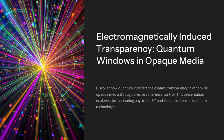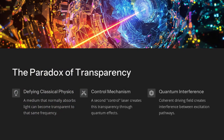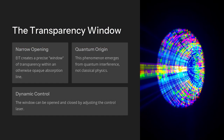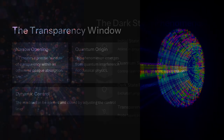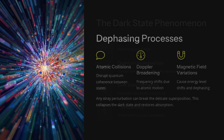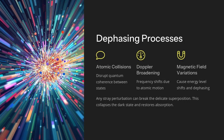How can a medium that normally absorbs light at a particular frequency be rendered transparent to that same light by the application of a second control laser? In electromagnetically induced transparency, EIT, a coherent driving field creates quantum interference between excitation pathways in a multi-level atomic or molecular system, opening a narrow window of transparency within an otherwise opaque absorption line.